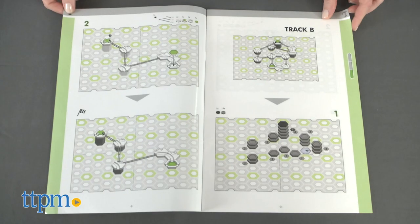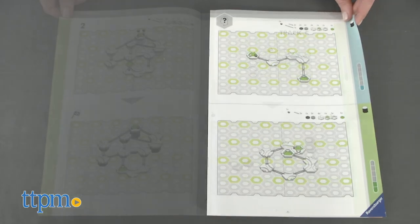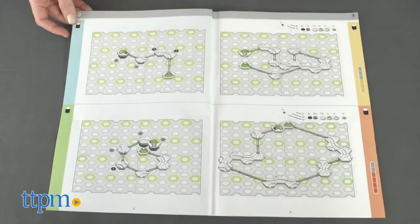One gives step-by-step instructions for building specific tracks, while the other challenges you to figure out what pieces are needed to complete the pictured track.